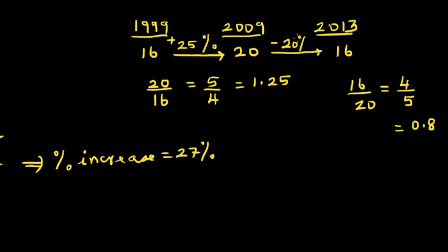Here you can see one key thing — the actual increase and decrease is the same (both 4), but the percentage increase is different: here it's 25 percent going up, and 20 percent going down.